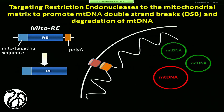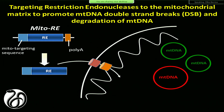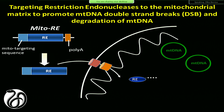The idea is to take a gene that codes for this restriction endonuclease — the enzyme that cuts DNA — and put a sequence that, once this protein is made, acts like a zip code that sends it to the mitochondria. So this protein would go into the mitochondria because of this targeting sequence, bind to the mutant mitochondrial DNA, and once it cleaves, this DNA gets degraded.